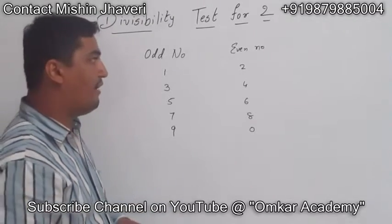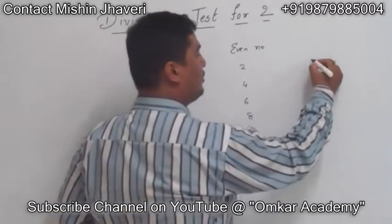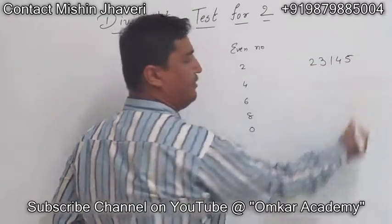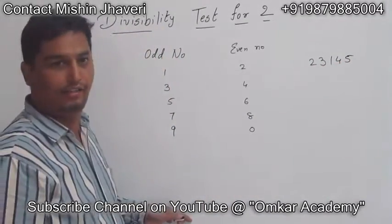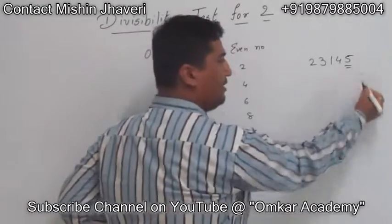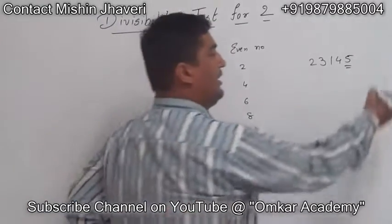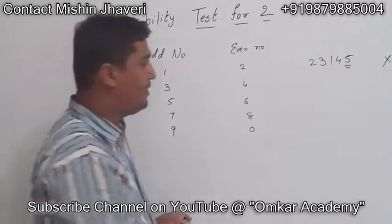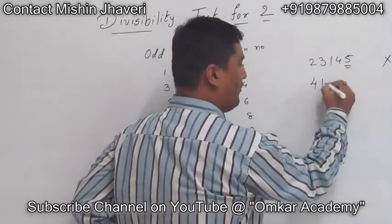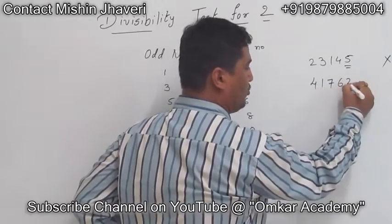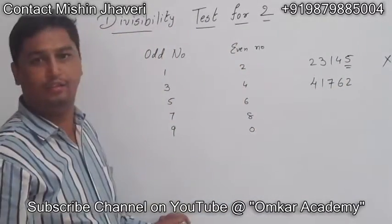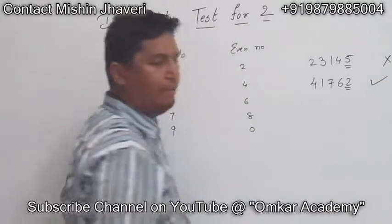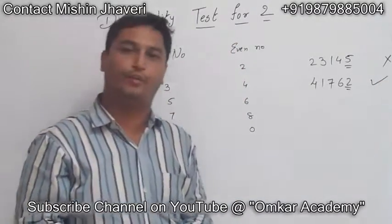Let us take one example: 23145. The ending digit here is 5, which is an odd number, so it is not divisible by 2. Suppose the number is 41762 — the ending digit is 2, so it is an even number, so it is divisible by 2. Thank you.